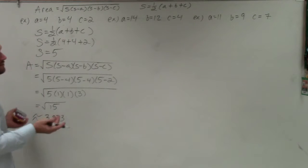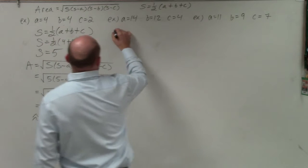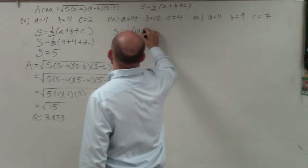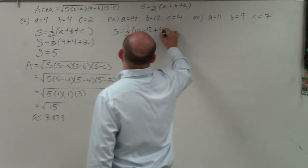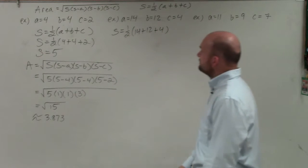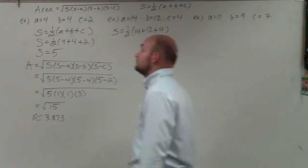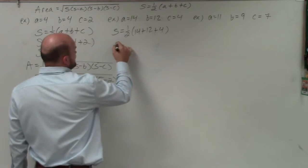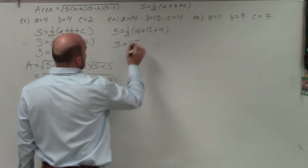OK. So in the next example, again, we're going to be doing the same thing. Let's identify our s. So that's going to be 1 half 14 plus 12 plus 4. So 14 plus 12 is 26. Plus 4 is going to be 30. 30 times 1 half is 15. So s equals 15.